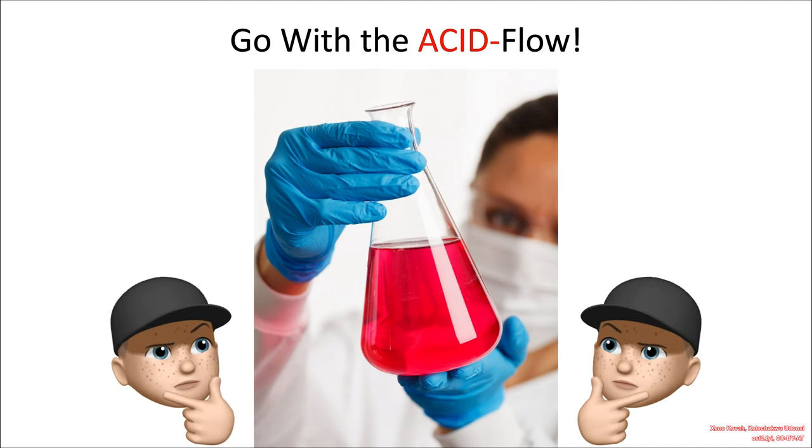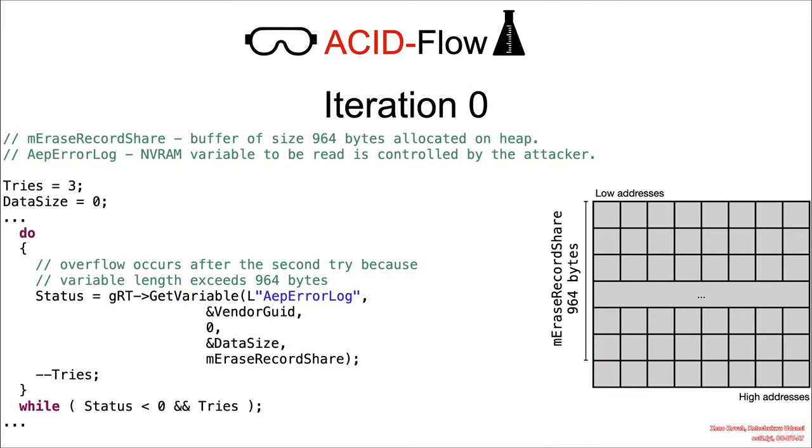Let's go with the ACID flow. What's happening here? On iteration zero, we've got our heap location with 964 bytes. We've got tries and data size set to non-attacker control values of three and zero respectively.